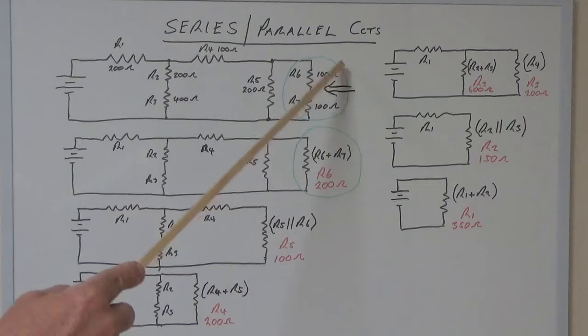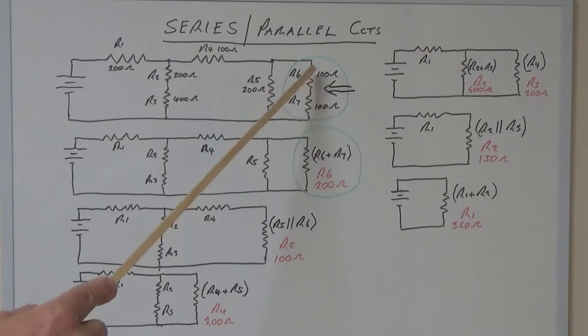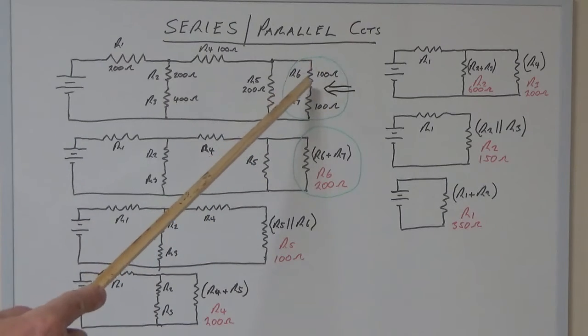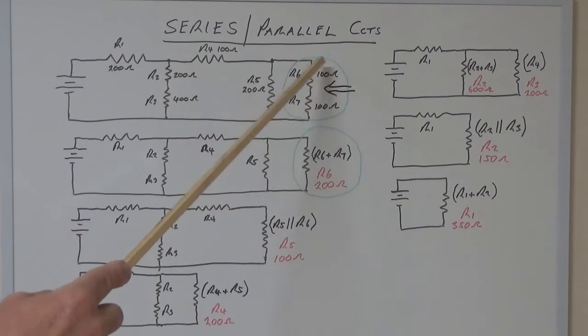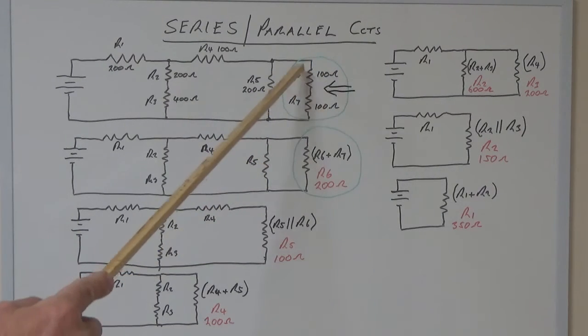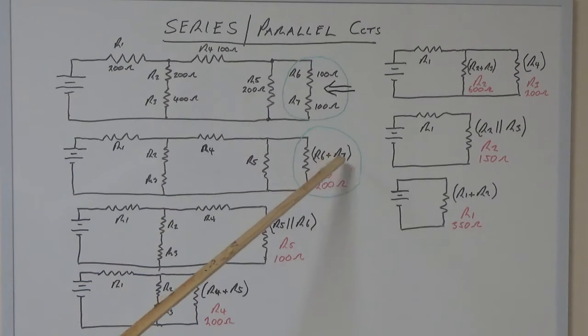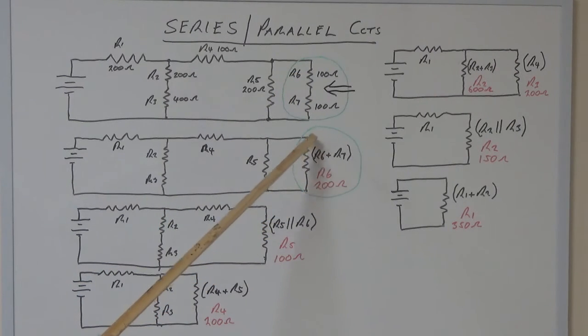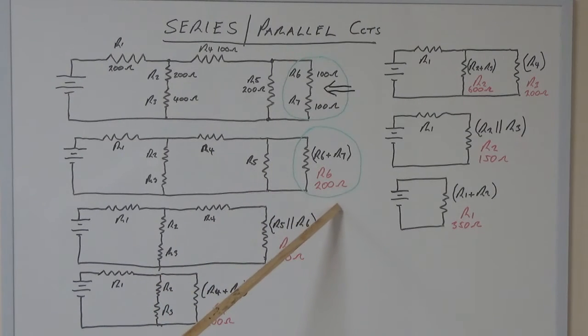You can see here that in the first stage we've got two resistors in series, and we know from previous calculations that we just need to add those together. We've got 100 ohms plus 100 ohms, which is R6 and R7. That gives us our new resistance, which is now 200 ohms.